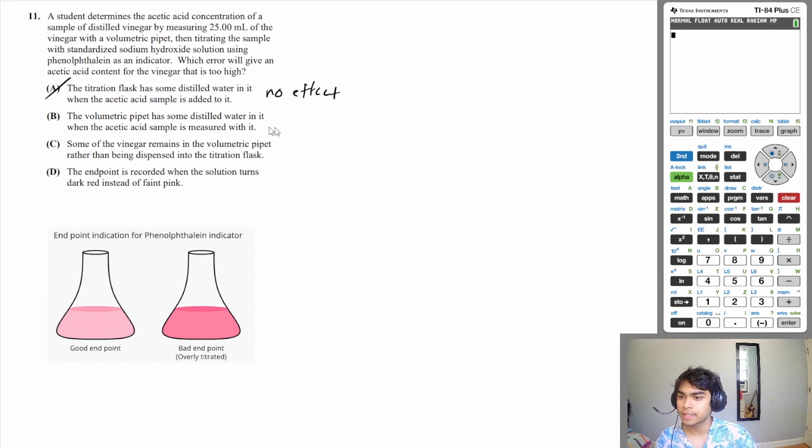B, the volumetric pipette has some distilled water in it when the acetic acid sample is measured with it. If the volumetric pipette has distilled water in it, then that means you have less acetic acid than you should. Therefore, when you go to standardize it with sodium hydroxide,